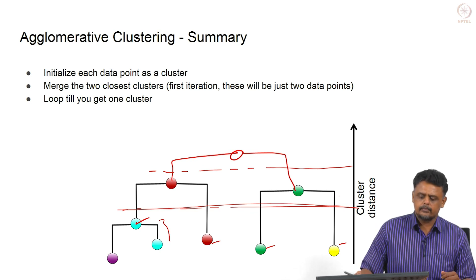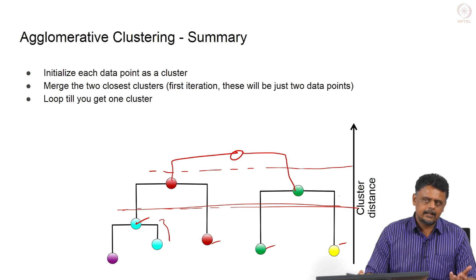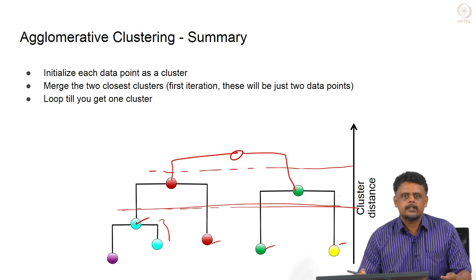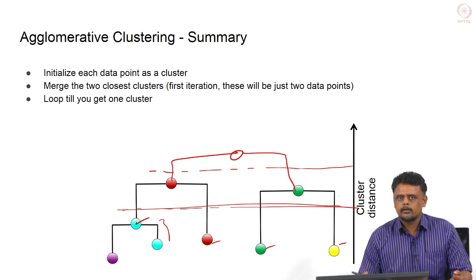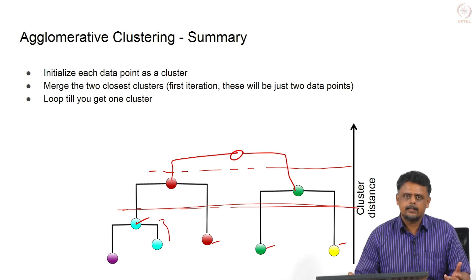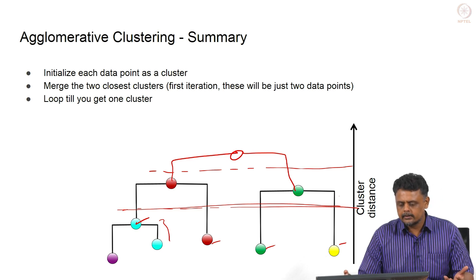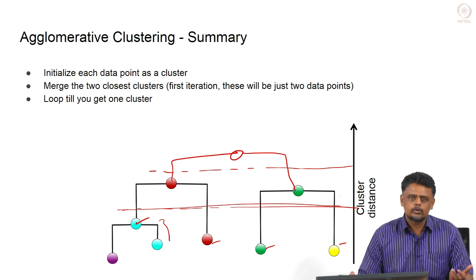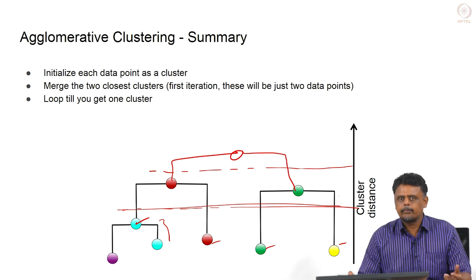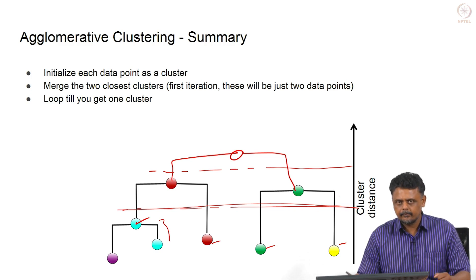With this we conclude our foray into unsupervised clustering techniques. Both k-means and agglomerative clustering are useful when we have large amounts of unlabeled data and are trying to figure out an underlying structure. Given no a priori information, these techniques are very useful even for very large datasets. Agglomerative clustering has been used in DNA microarrays, and k-means has been used for image processing, among other applications. Thank you.